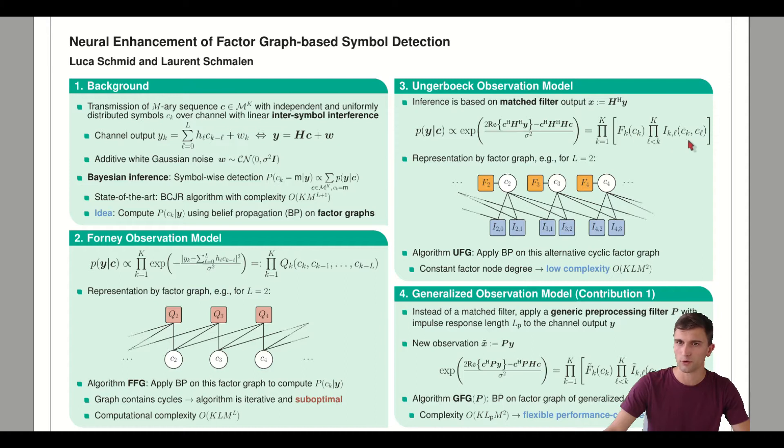In comparison, the Forney observation model had a factor node degree dependent on L which grows linearly with L. For the Ungerberg observation model, this nice property leads to quite low complexity. We only grow linearly with L. But of course the graph is also cyclic, which means this UFG algorithm is also suboptimal.